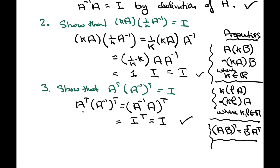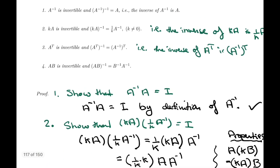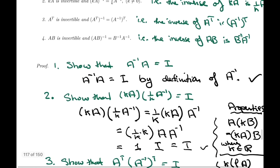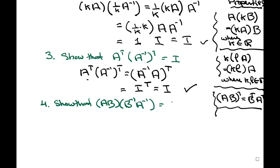Finally, we're left with number 4. Number 4 says that if A and B are invertible matrices, then AB is invertible, and the inverse is B inverse times A inverse — notice that we reverse the order. So the inverse of the matrix AB is the matrix B inverse A inverse. If that's the claim, then we need to show that AB times B inverse A inverse is equal to I.